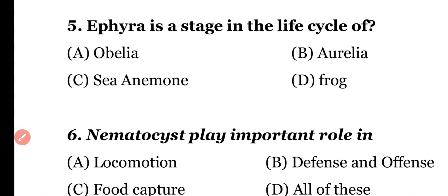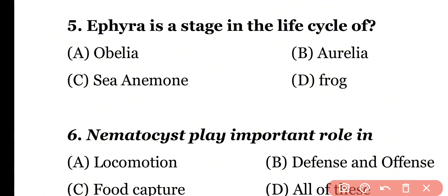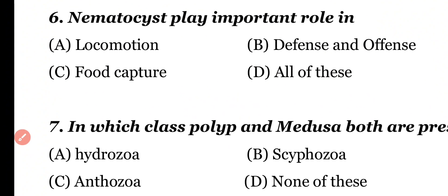Question number 5: Ephyra is a stage in the life cycle of: Obelia, Aurelia, Sea Anemone, or Phylum? Correct answer is option B. Ephyra is a stage in the life cycle of Aurelia, or Jellyfish.